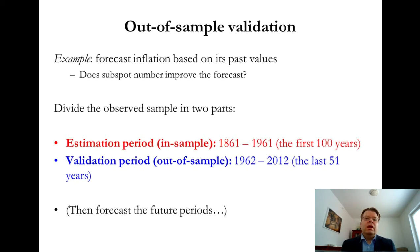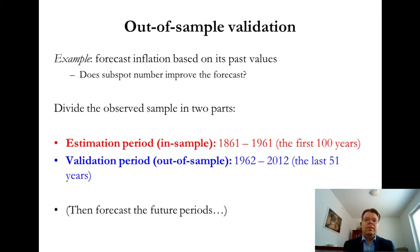One more point before proceeding to the empirical example: a similar kind of out-of-sample validation is also possible with cross-sectional data. You could, for example, randomly draw two subsamples from your dataset — say, apartments in a dataset — by randomly splitting the full data into two subsets using random number generation. You could then see how well the model fitted on one subsample predicts the other subsample. That's also possible for cross-sectional or panel data. But in the case of time-series data, it is natural to start the estimation with the chronologically older data and then validate on the newer data.